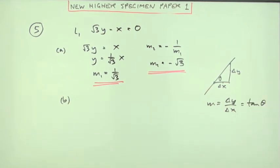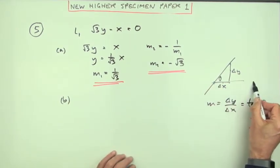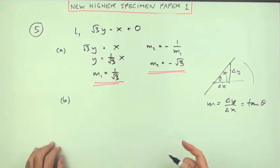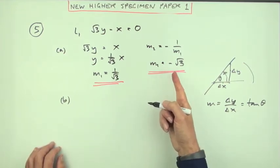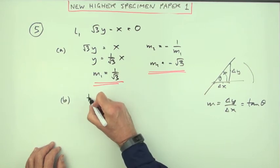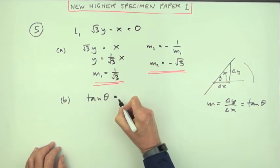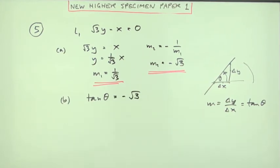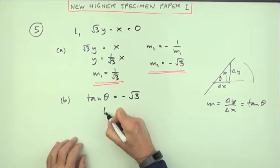But notice it's the angle in here, the angle clockwise from the horizontal. So first I'll see that the gradient is the tangent of the angle, so tan θ is going to be negative √3. That gets you a mark.